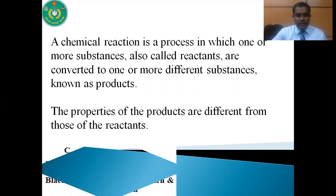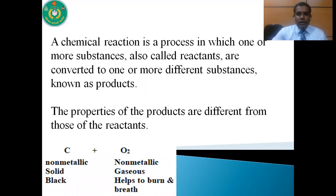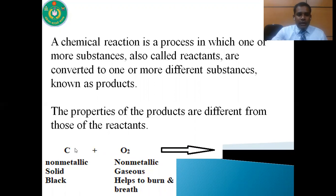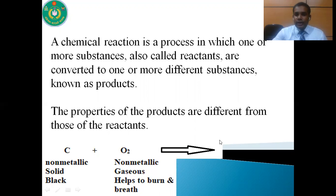Here is an example. If carbon and oxygen react with each other, we get carbon dioxide. Carbon is a non-metallic substance — it is solid and black. On the other hand, oxygen is a non-metallic substance — it is gaseous and it helps to burn and breathe. So when carbon and oxygen react, we get carbon dioxide.